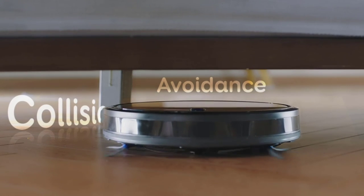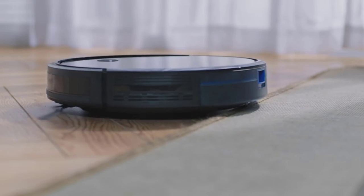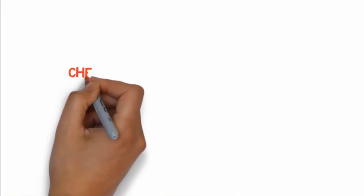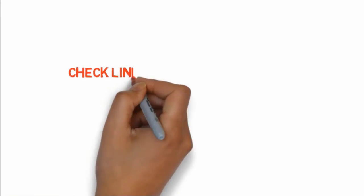Besides, you can set a preset vacuuming time to permit it to clean while you are working or absent. Its slim design allows it to clean under furniture or other tight places. So if you want to buy these products, check the link in the description box.